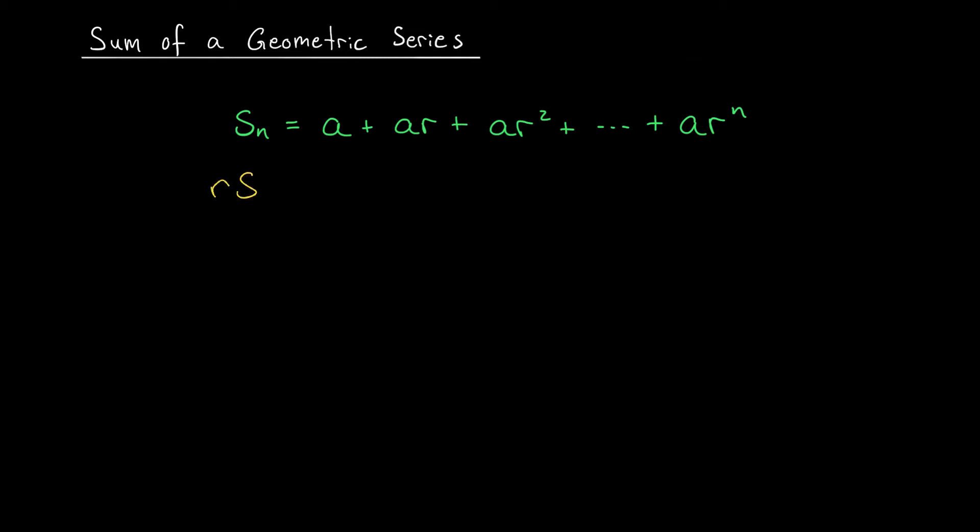Let's write this down. When we multiply by r, on the left we have r times sn, and on the right I have ar plus ar squared all the way up to ar to the n, and I have one more term now, ar to the n plus 1.